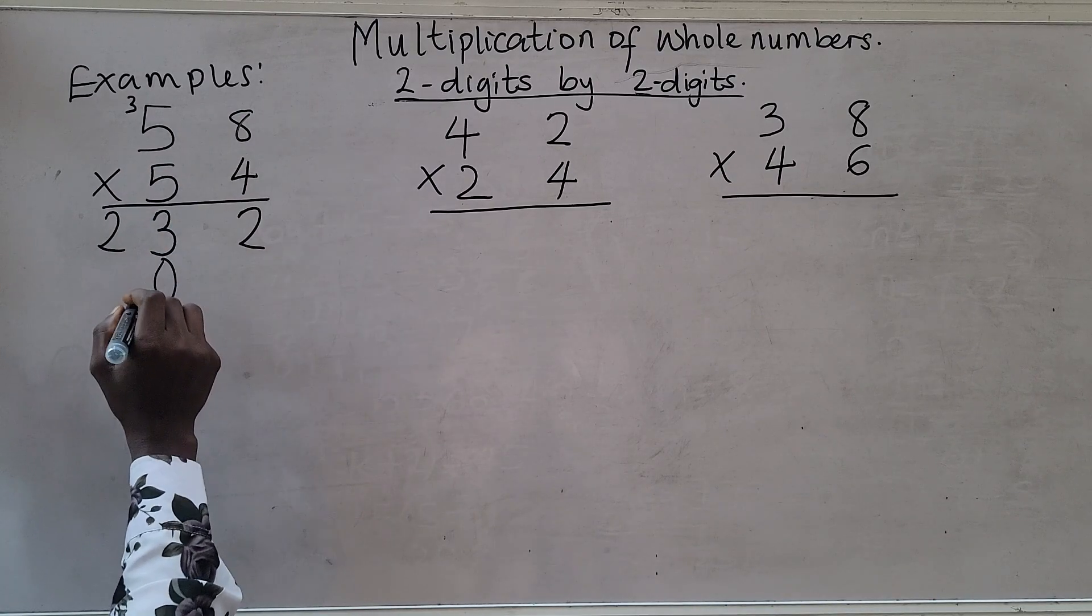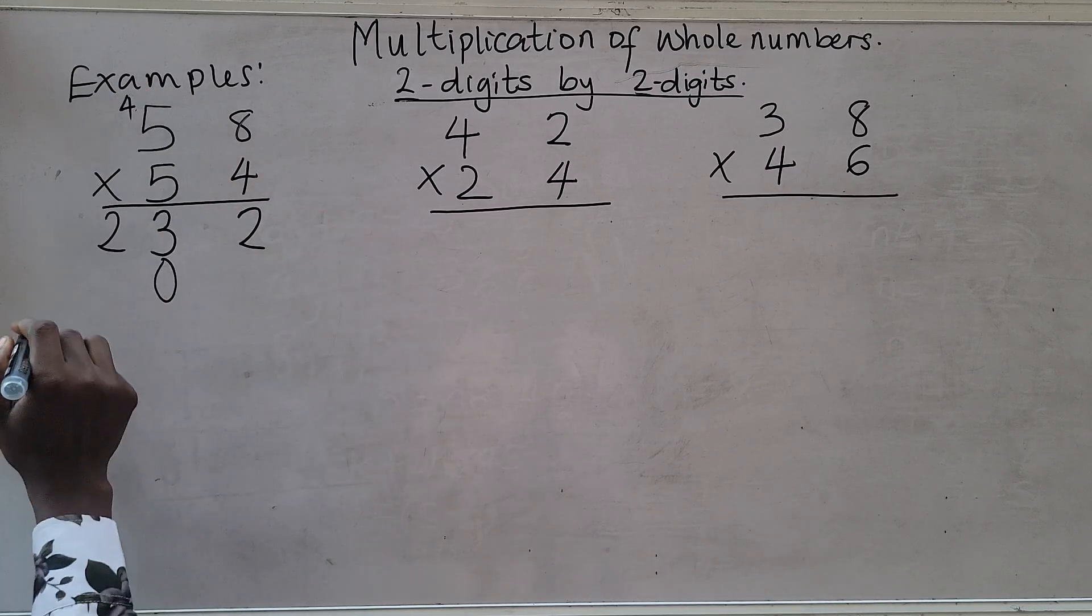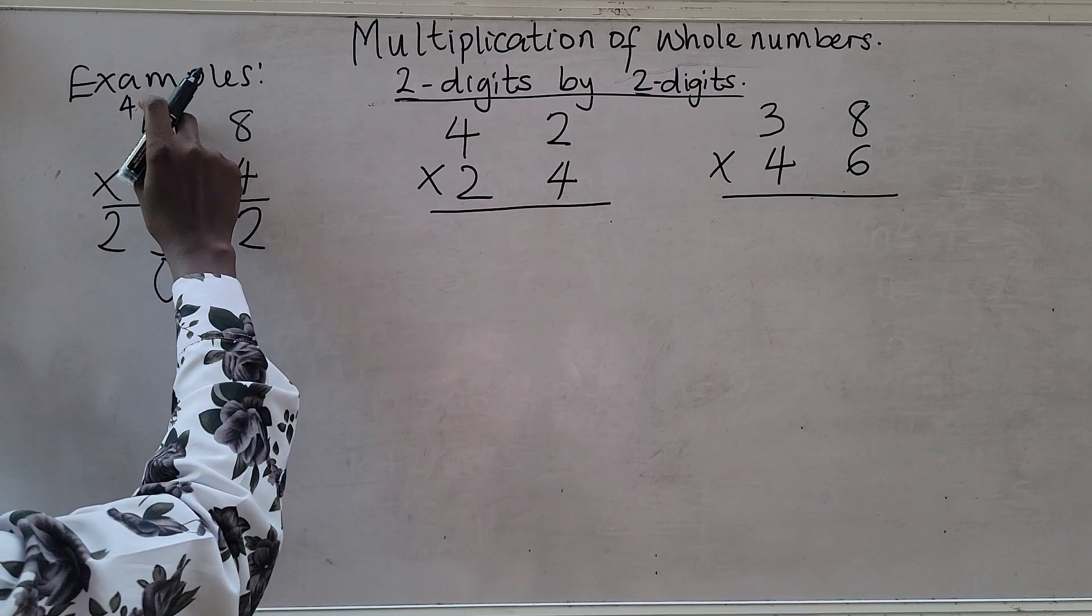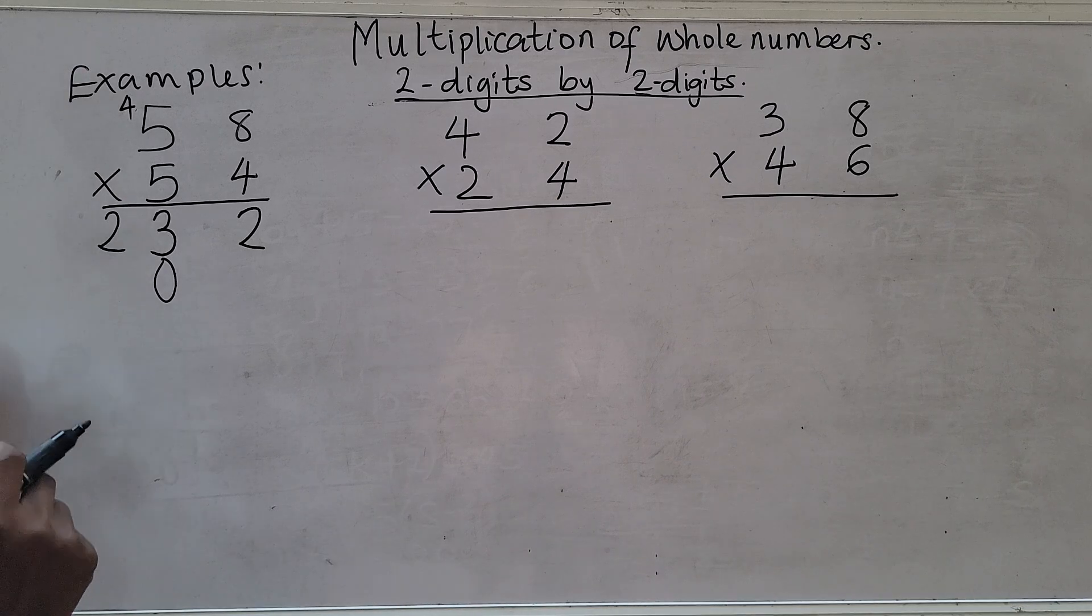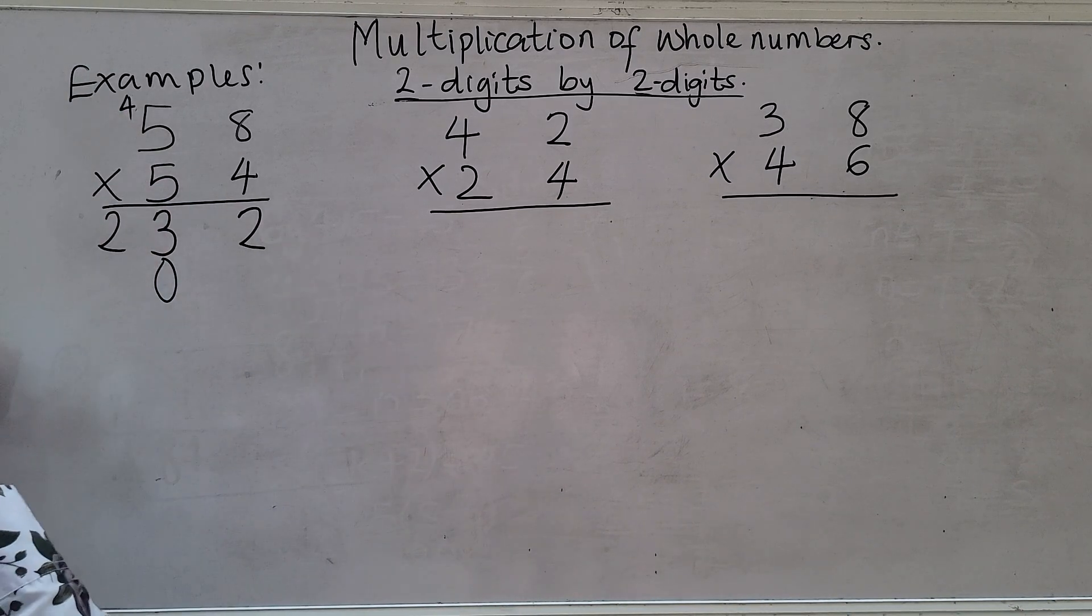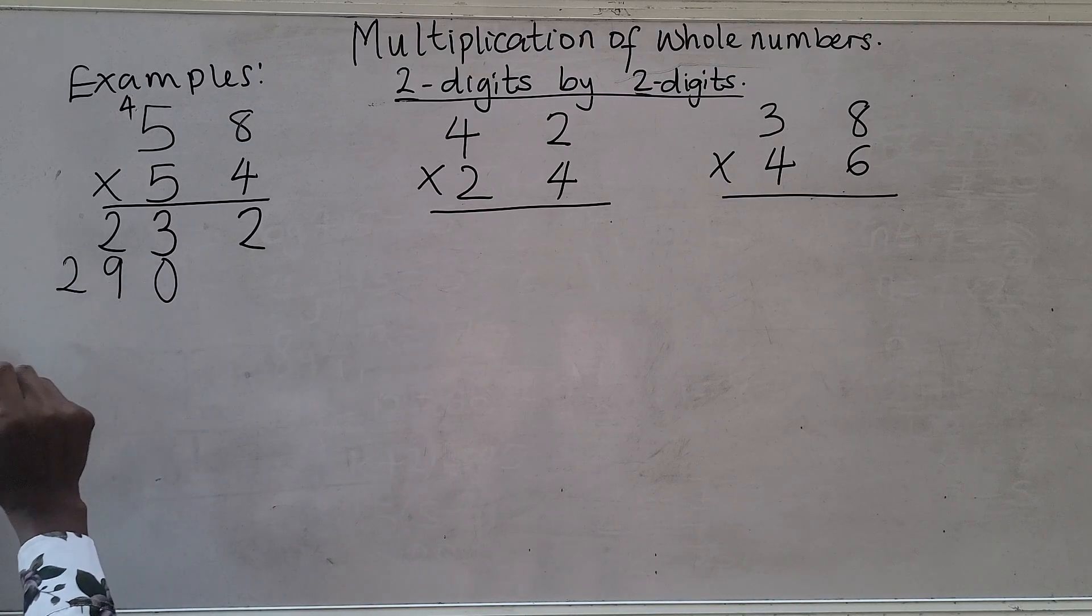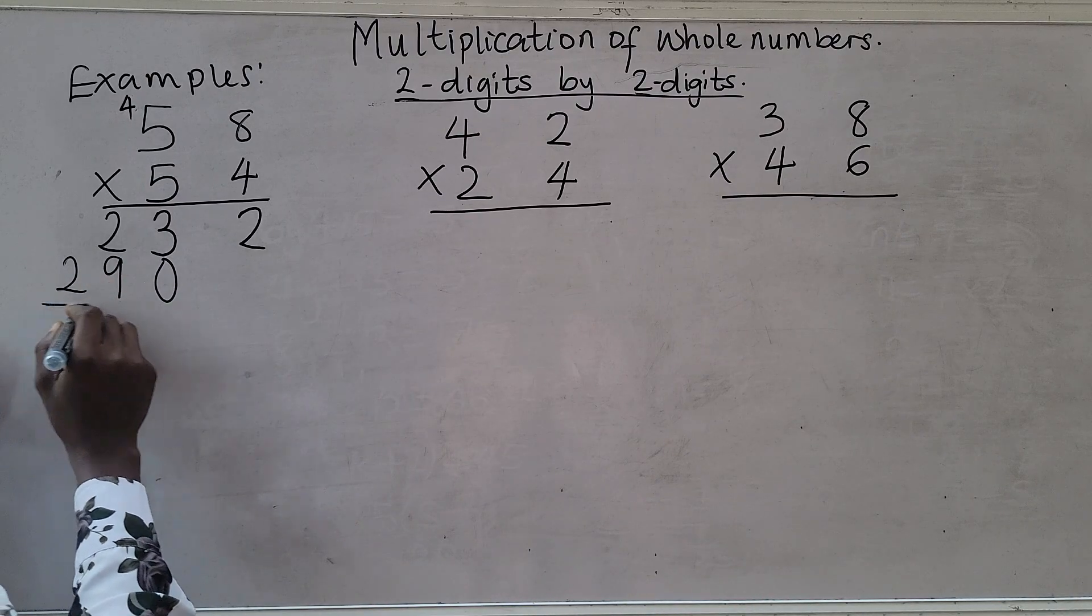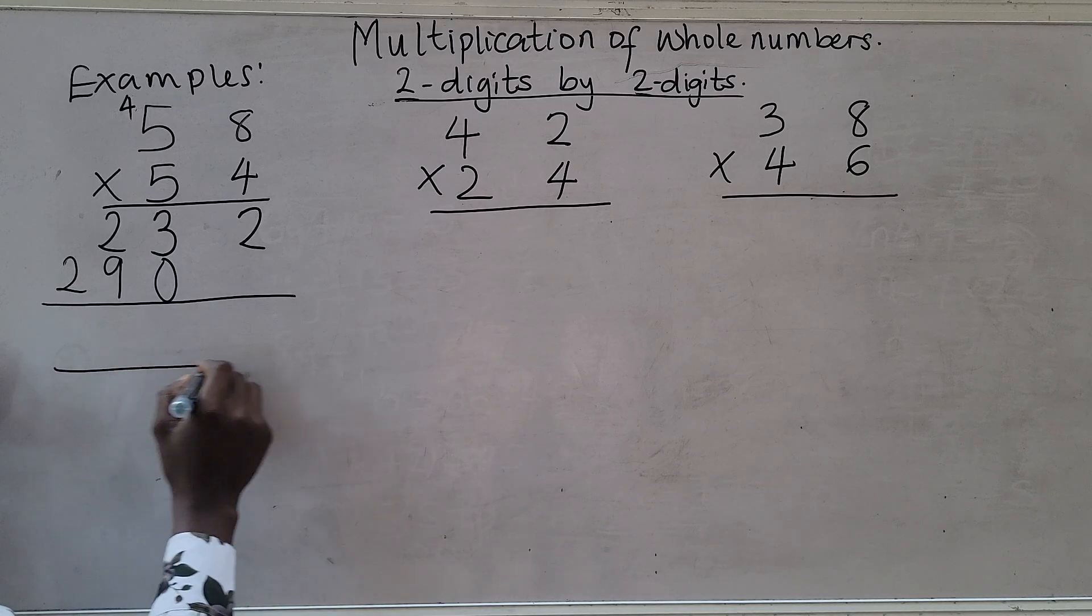Write your zero and bring your four here. Then we have five times five, which is going to give us 25. 25 plus four, that's 29. So we have two nine. The moment you are here, the next thing is for you to draw your line.